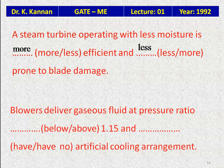Question 13: A blower delivers gaseous fluid at a pressure ratio — below 1.15 and has no artificial cooling system. Blowers normally operate at pressure ratios around 1 to 2. Artificial cooling is used in gas turbines but not in blowers or even compressors. The answer: blowers deliver gaseous fluid at a pressure ratio below 1.15 and have no artificial cooling arrangement.